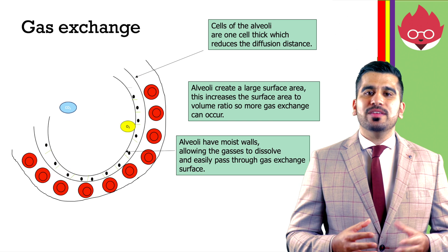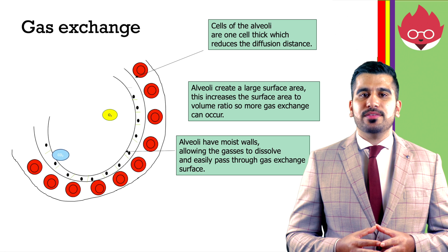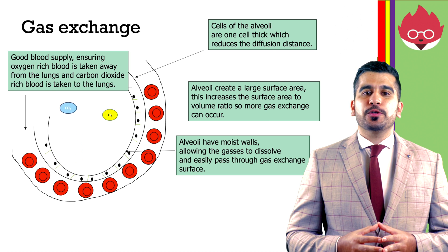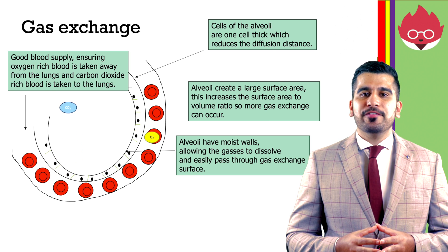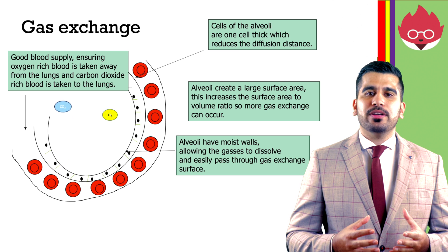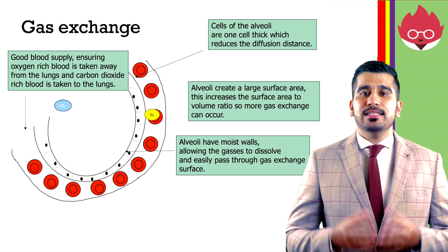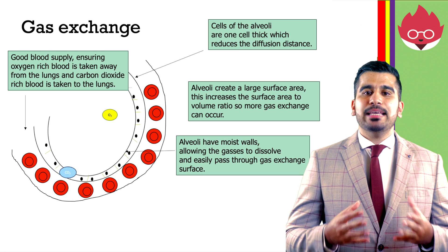Alveoli have moist walls, allowing gases to dissolve and easily pass through the gas exchange surface. They have a good blood supply, ensuring oxygen-rich blood is taken away from the lungs and carbon dioxide-rich blood is taken to the lungs. This is important in keeping the concentration gradient steep. Breathing also maintains the concentration gradient, ensuring that the oxygen concentration in the alveoli is always higher than in the capillaries, so oxygen moves from the alveoli into the blood, and carbon dioxide diffuses in the opposite direction.